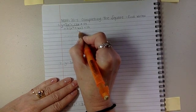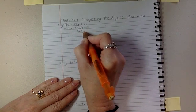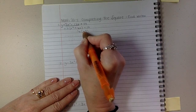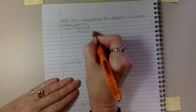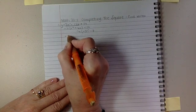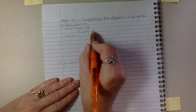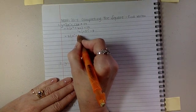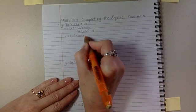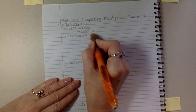Then the arrow step is take half of whatever is with the x and its sign and square it. Next, add this in the brackets, plus and minus.